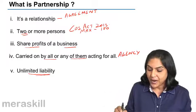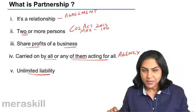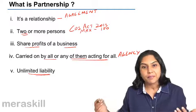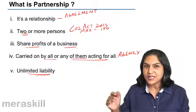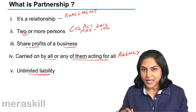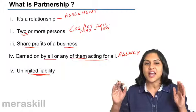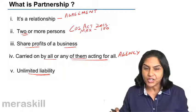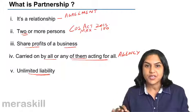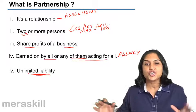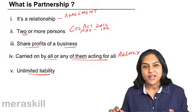To repeat: all partners represent the firm. Each partner represents the other partners and the partners have unlimited liability. So if the partnership firm has losses, liabilities, or obligations, each partner is individually, personally, and jointly responsible for these liabilities of the partnership firm.